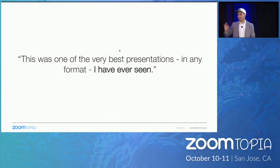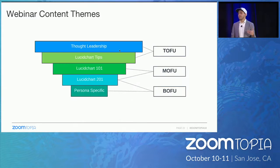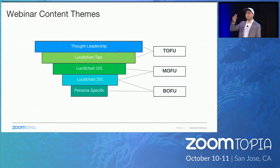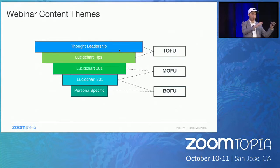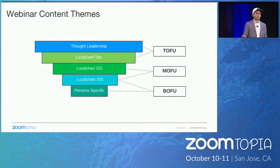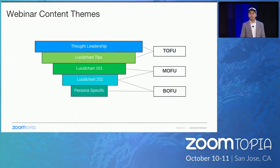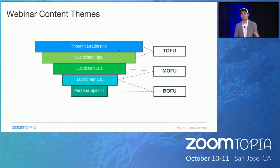What webinar content themes should you create? We separated our themes into top, middle, and bottom of funnel. Top of funnel is thought leadership — not talking about Lucidchart. Middle of funnel is 'Lucidchart tips': how you use Lucidchart for marketing, for sales. Then Lucidchart 101 — how to use it to map out your process and visualize complex ideas. Then 201, an advanced version. Then persona-specific content, like how a specific feature helps sales reps do account mapping in Salesforce.